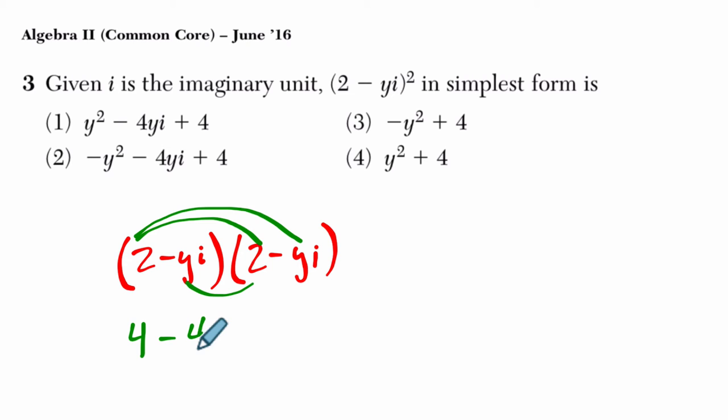so it's negative 4yi. And then finally, we have negative yi times itself. Now negative y times negative y is positive y squared, but i times i is i squared, and i squared equals negative 1.